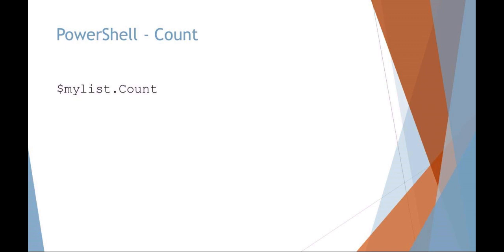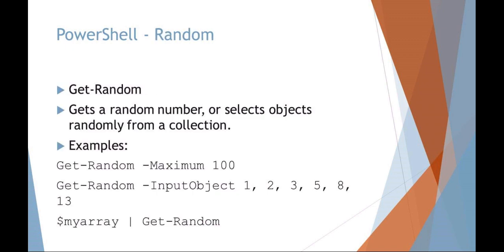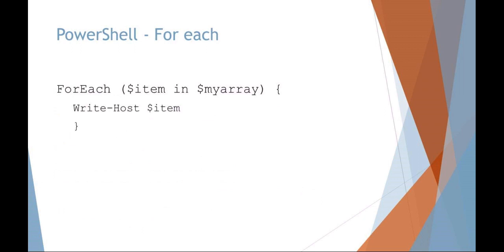To get random numbers in PowerShell you can use Get-Random, which will get a random number or select a random object from a collection. You can say Get-Random -Maximum 100 to get a number from zero to one hundred. You can also provide an -InputObject list, such as 1, 2, 3, 5, 8, 13, and it will randomly select one of those values. Alternatively, if you have a populated array, you can pipe it to Get-Random to select a random object from it.